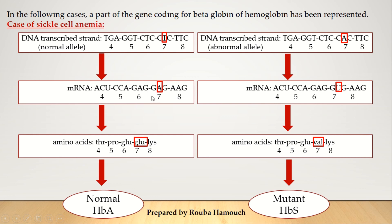This modification in the mRNA affects the amino acid sequence, since the protein is derived from the mRNA by translation — one codon codes for one amino acid. The codon GAG, according to the genetic code table, codes for glutamic acid, whereas GUG codes for valine. So the amino acid sequence has changed: valine instead of glutamic acid. We therefore have a mutant and abnormal hemoglobin, HbS. In this case, the substitution affects the DNA sequence, the protein sequence, and the phenotype.